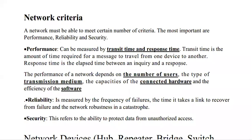Transit time refers to how long it takes for a message to travel from one device to another — whether that is 1 second, 2 seconds, 3 seconds, or 10 seconds. The more time it takes, the worse our network performance is. The faster the message travels and is delivered, the better our network performance.